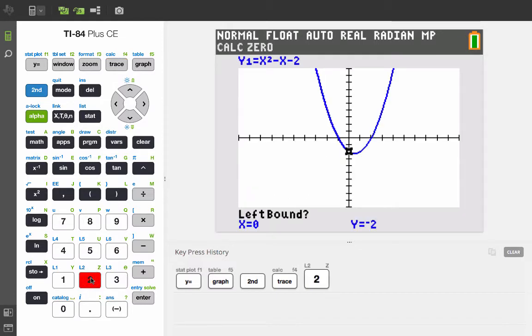And we need what's called a left bound and a right bound. Now, in this problem, you'll see that there are two zeros, and we need to tell the calculator what value of x is a little to the left of where the zero is and a little to the right.